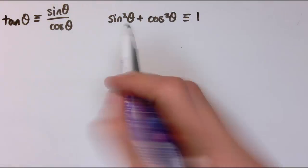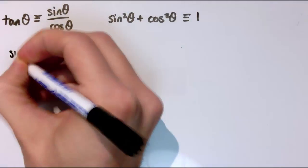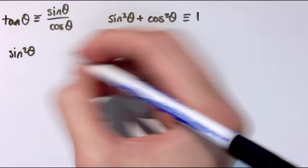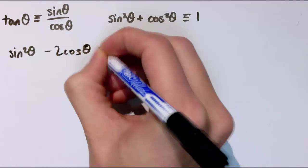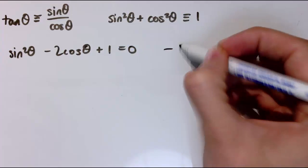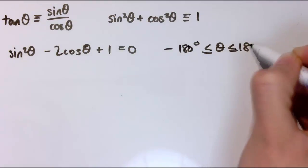And what about this other one? When can we use this one? Let's say I've got something like sin² θ minus 2 cos θ plus 1 equals 0, and I'd like to solve this. And again, let's have a range of values. So let's do this one between minus 180 degrees plus 180 degrees.